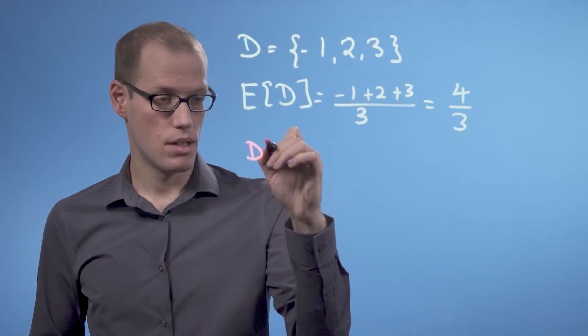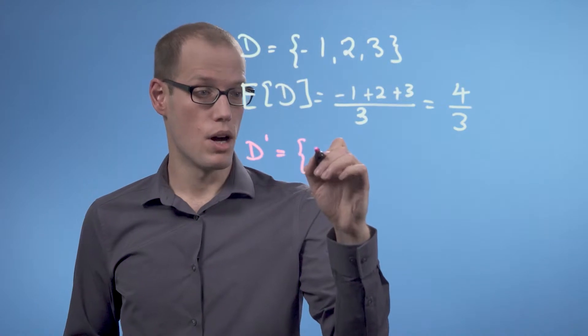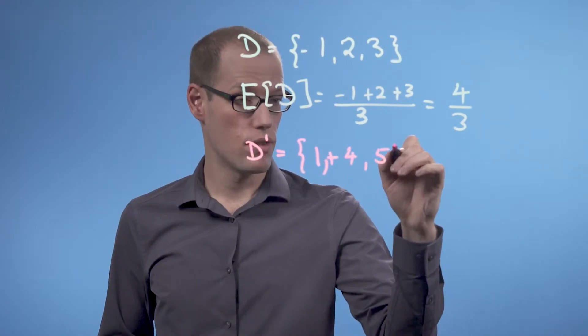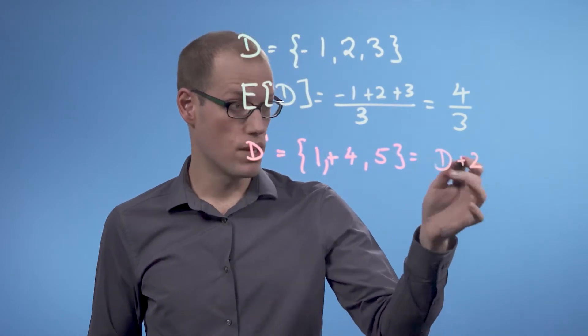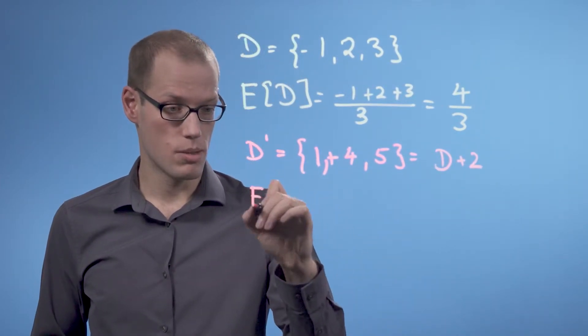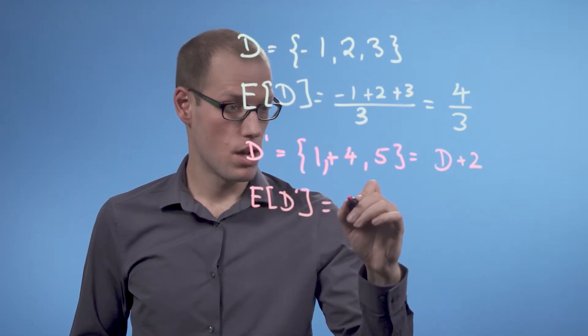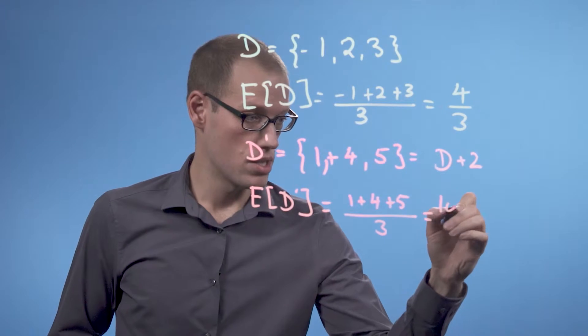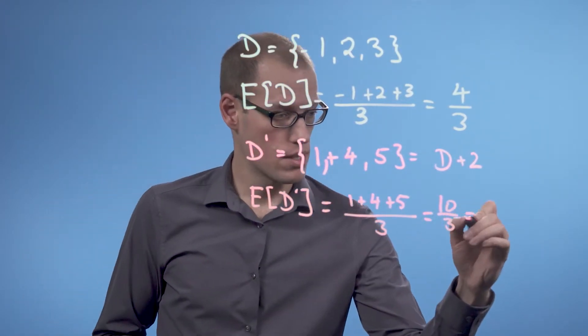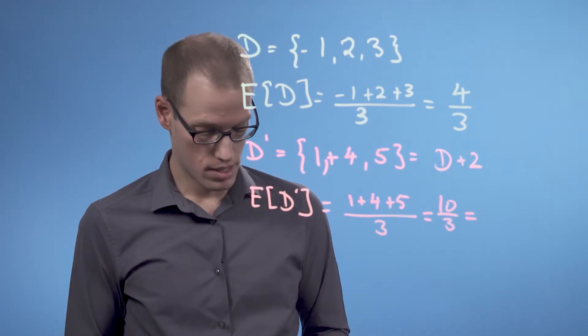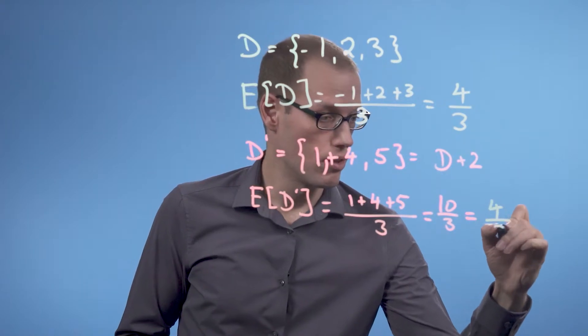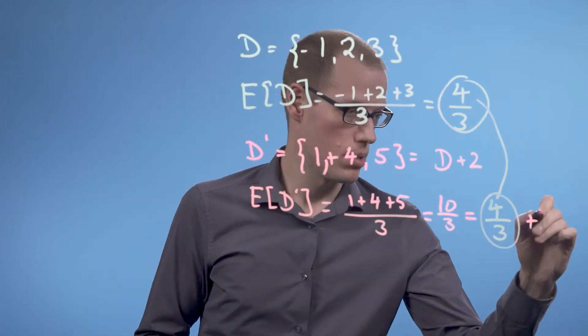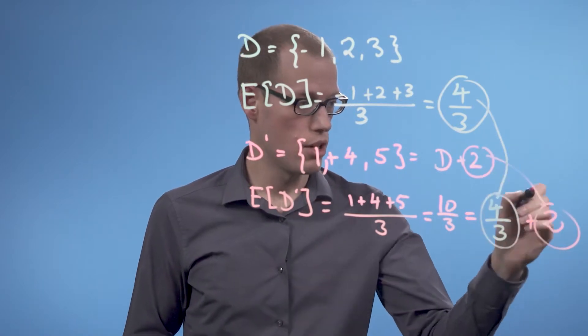Let's define D' to be the data set 1, 4, and 5 which is D plus 2 for every individual component in D. Then the expected value of D' is 1 plus 4 plus 5 divided by 3 which is 10 over 3. In particular we can write this in a slightly different way. We can write this as 4 over 3 which comes from here plus 2 which is the shift or the offset of the original data set.